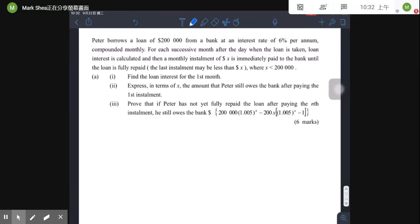Okay, now please read the question carefully. It is a long question and this is also an application of AS and GS, and this is about the installment. Now from the question we know that Peter borrows a loan of